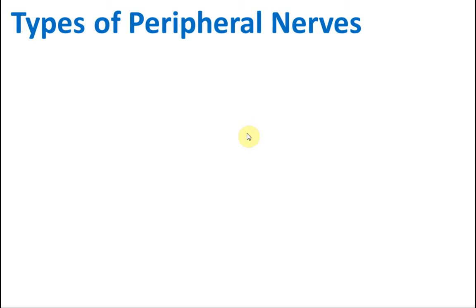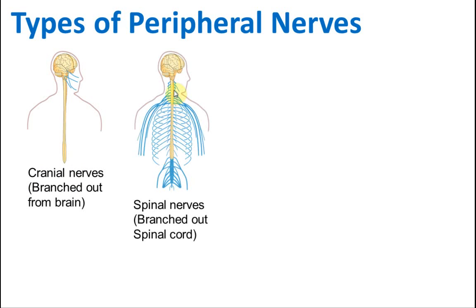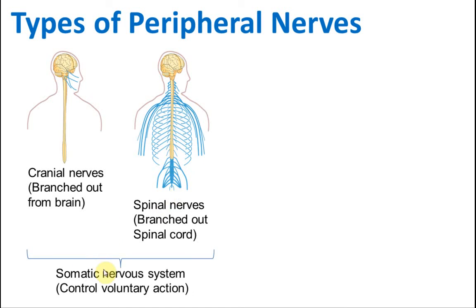There are two types of peripheral nerve: the cranial nerves that branch out from the brain, and the spinal nerves that come out from the spinal cord. Both of these are in the somatic nervous system, which is a system that controls voluntary actions — actions that you intend to do.